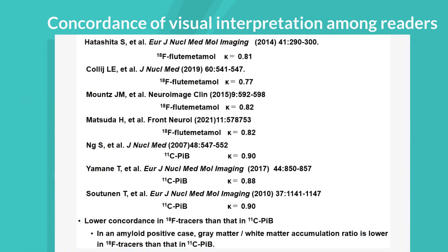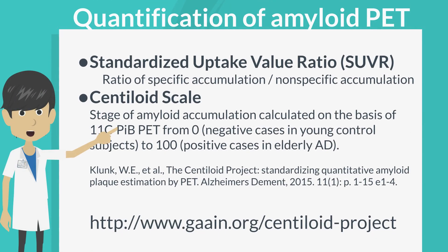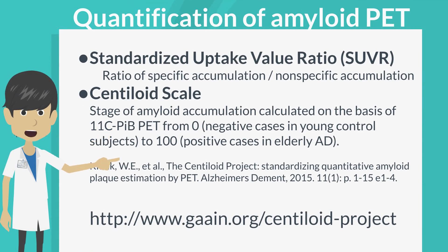In visual reading of amyloid PET, there is lower concordance with fluorine-18 labeled tracers than with carbon-11 PIB. In amyloid positive cases, the gray matter over white matter accumulation ratio is lower in fluorine-18 labeled tracers than in carbon-11 PIB. This low contrast makes assessment of mild gray matter accumulation difficult. To help visual reading, quantification of amyloid PET is proposed.